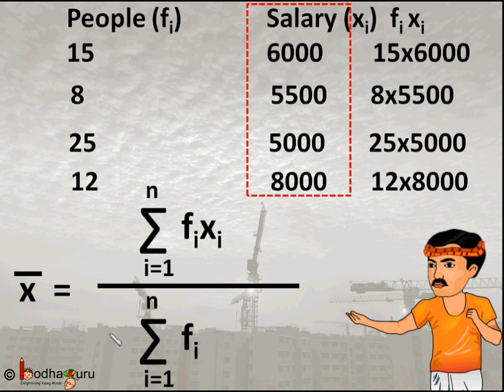Sum it up and then divide by sum of frequency, that is x̄ = Σfixi / Σfi where i goes from 1 to n. So this is what we learnt in our earlier video.